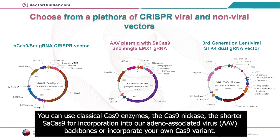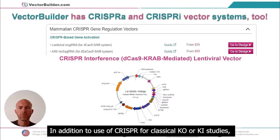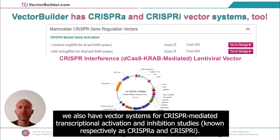You can use classical Cas9 enzymes, the Cas9-nickase, the shorter SA-Cas9 for incorporation into our adeno-associated virus or AAV backbones, or incorporate your own Cas9 variant. For example, we are getting more requests for RNA-targeting Cas9 enzymes. In addition to use of CRISPR for classical knockout or knock-in studies, we also have vector systems for CRISPR-mediated transcriptional activation and inhibition studies, known respectively as CRISPR-A and CRISPR-I.